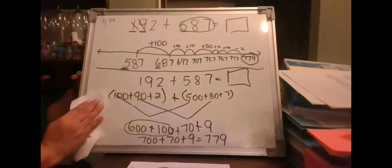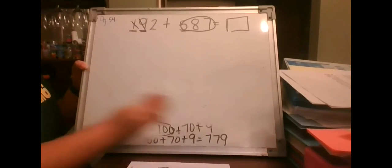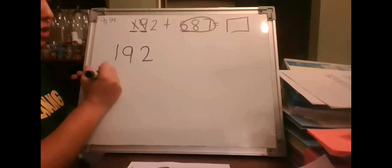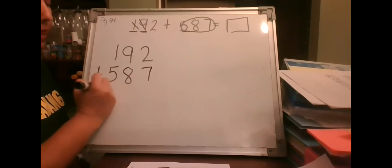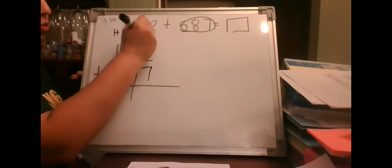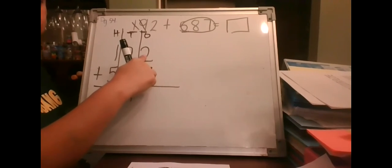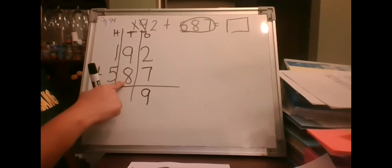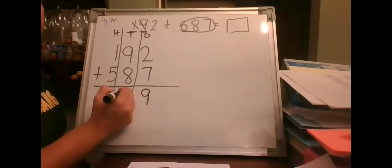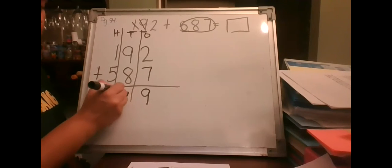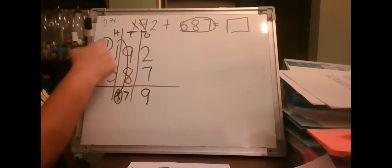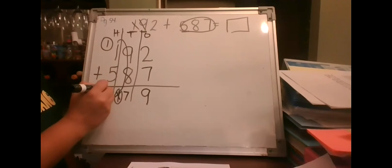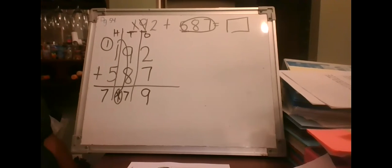Now let me show you the algorithm — the new way you learned to add three-digit numbers. We have hundreds, tens, and ones. Seven ones plus two ones gives nine ones. Nine tens plus eight tens gives 17 tens — we made a special hundred and move it over, leaving seven tens. Then five hundreds plus 100 plus 100 is 700, giving us 779.